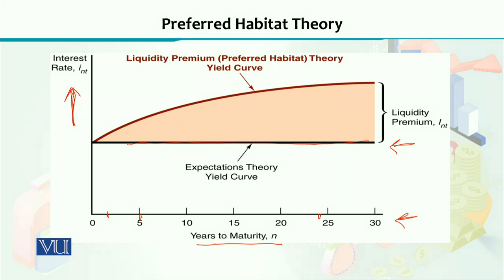The expectation theory says that the expected yield on a short-term bond is more or less going to be the same as we expect for a long-term bond, giving us a horizontal straight line. This horizontal line serves as the baseline for explaining the liquidity premium theory or preferred habitat yield curve. If you invest in a short-term bond, you have a certain interest rate, for example 5%.